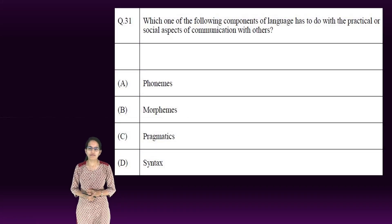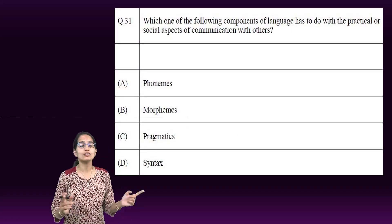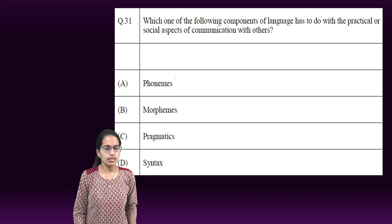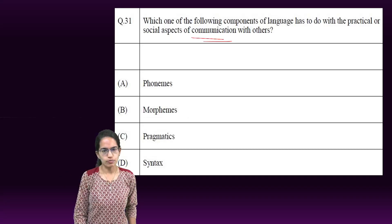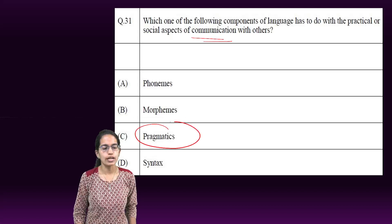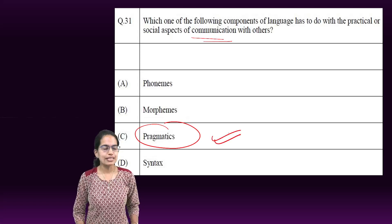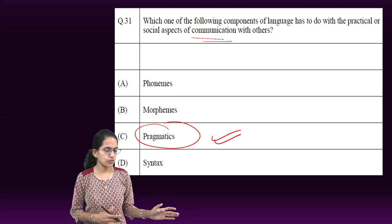Next is: which of the following component of language has to do with practical and social aspects of communication? Practical and social aspects of communication is called pragmatics. The complete details are available in the Dure Stir Tutor description lecture series that we have covered.